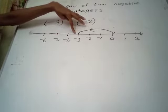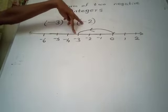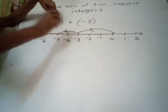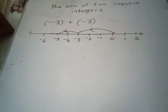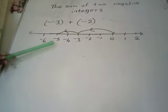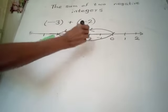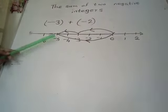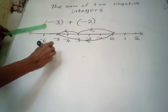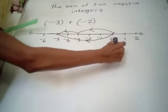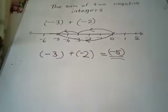From this point, let's go another 2 units towards the left along the number line. The directed number denoted by the position at which we finally stopped is the answer. We stopped at negative 5. So negative 3 plus negative 2 equals negative 5.